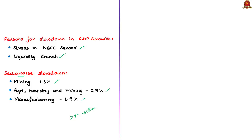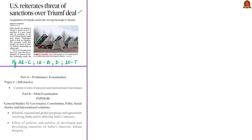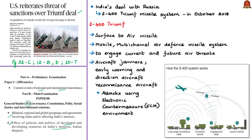Have a look at the practice prelims question — we shall discuss it at the end of the analysis session. The next news article is titled 'US Reiterates Threats of Sanctions Over Triumph Deal.' This discussion will be relevant in your prelims preparation under current events of national and international importance, and in your mains preparation in General Studies paper 2 — particularly bilateral and global groupings and agreements involving India, and effects of policies of developed countries on India's interests.